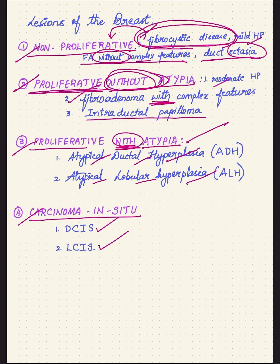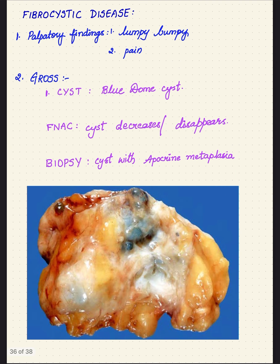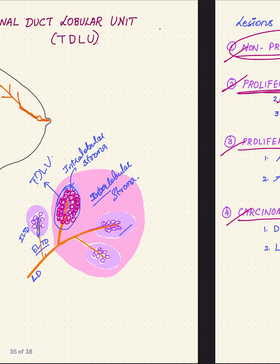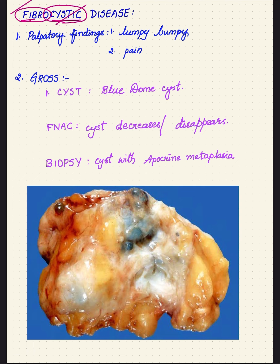The disease we are going to discuss, fibrocystic disease, comes under non-proliferative lesions of the breast. The name itself suggests fibrocystic: fibrous component, cystic component. Along with that, another component is adenosis — meaning increased number of acini per lobule. If a normal lobule contains 10 acini, it will be increased to more than 10. This increased number of acini per lobule is one component of fibrocystic disease along with fibrosis and cystic change.